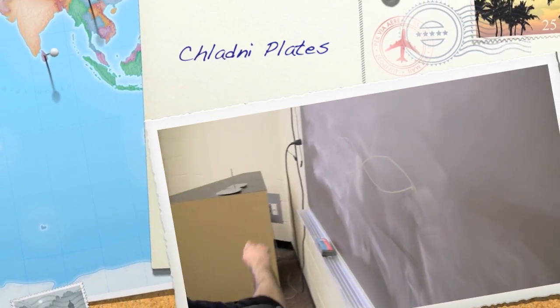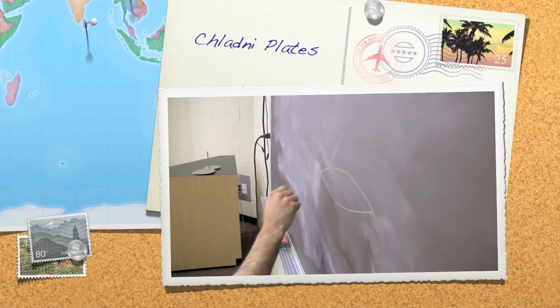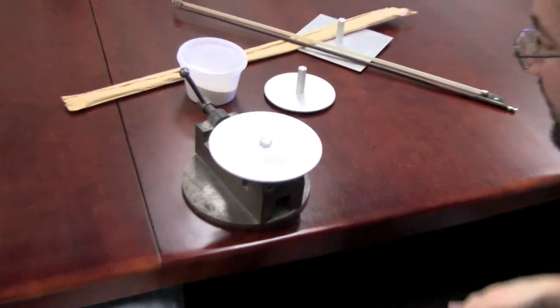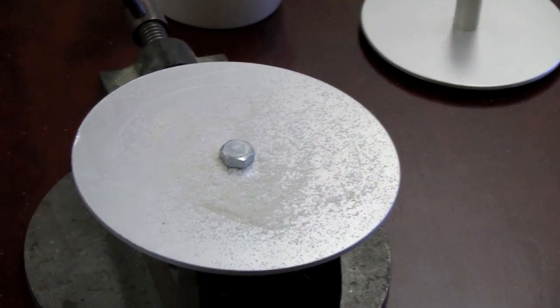This one will make the top of this vibrate, and where it moves up and down a lot, it'll bounce the sound around until it randomly goes to a place where it's not bouncing around a lot. So we'll be able to find the nodal lines or rings or whatever they turn out to be on the disc here.